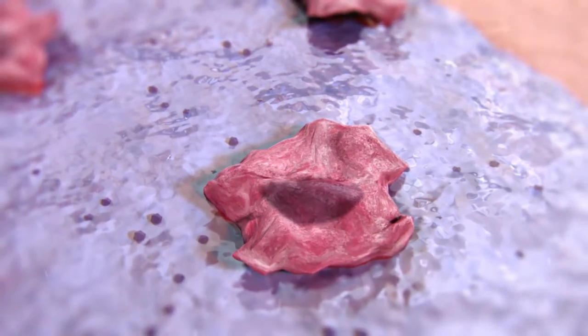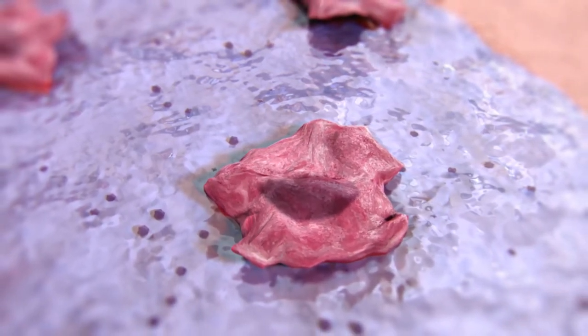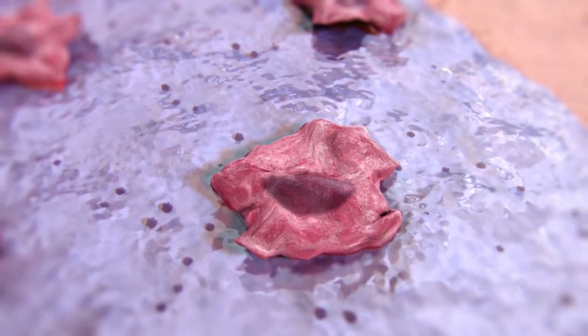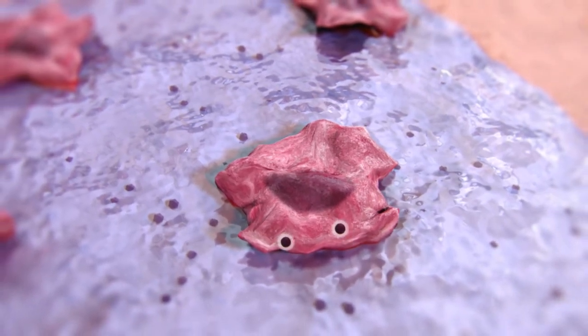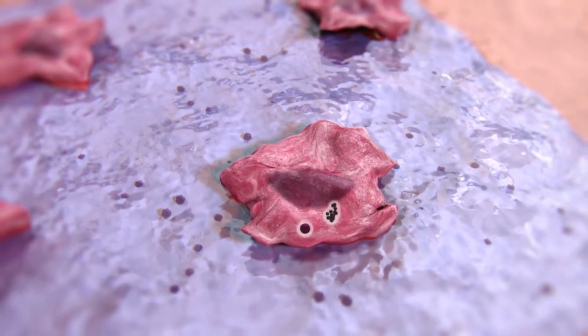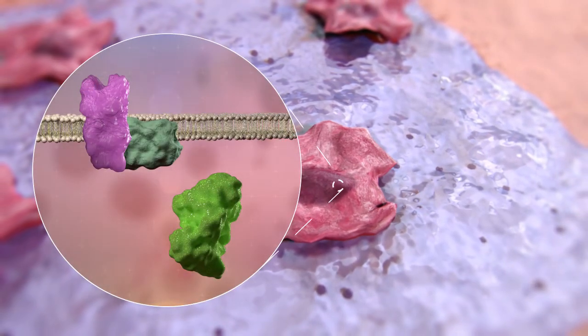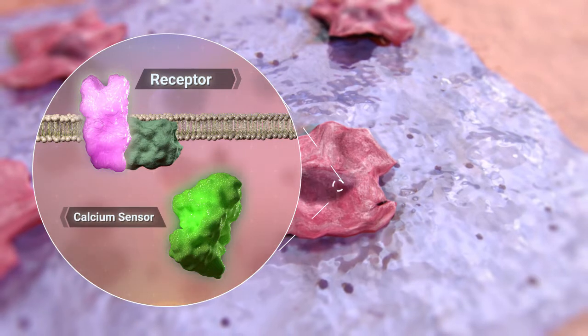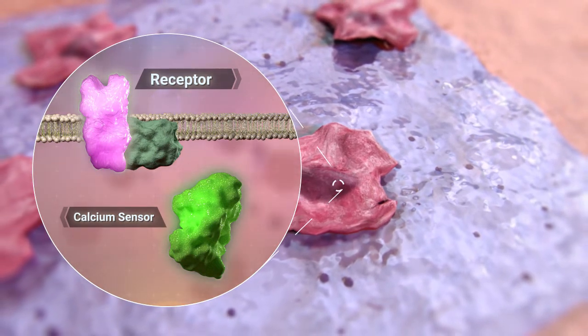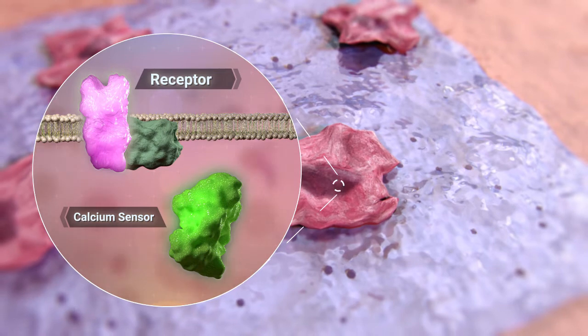The lipid transfection reagent has formed micelles that encapsulate the receptor and calcium sensor DNA. These micelles are internalized and broken down by the cells, thereby releasing the receptor and calcium sensor coding DNA, which is taken up by the nucleus during cell division.